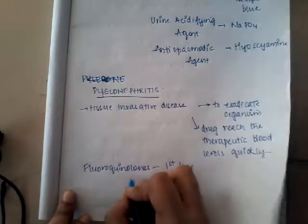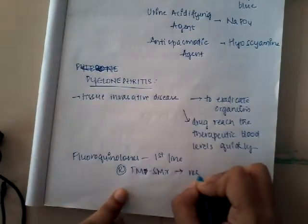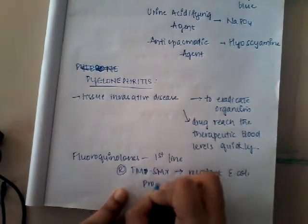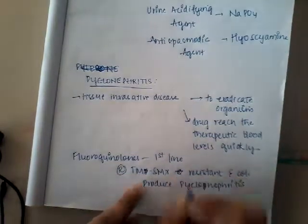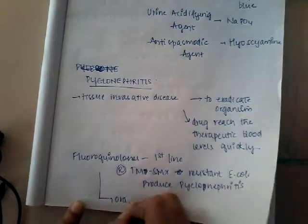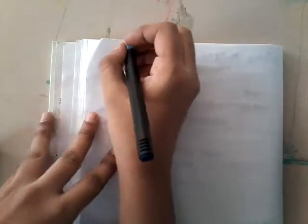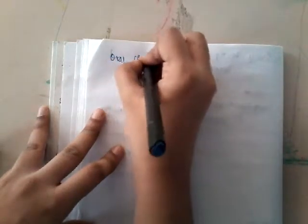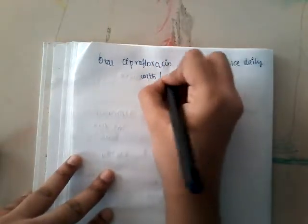The reason fluoroquinolones are first-line is that pyelonephritis is mostly caused by trimethoprim-sulfamethoxazole-resistant E. coli. Fluoroquinolones can be given orally or parenterally. The best fluoroquinolone for pyelonephritis is oral ciprofloxacin, given at a dose of 500 mg twice daily, with or without an initial IV dose of 400 mg.